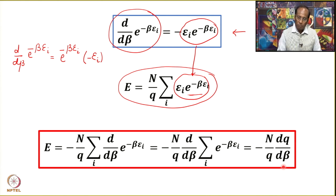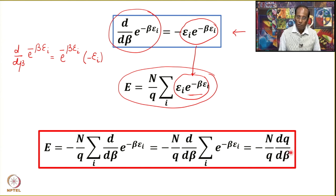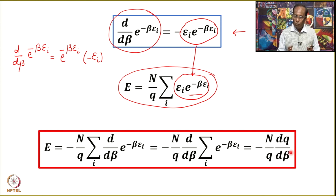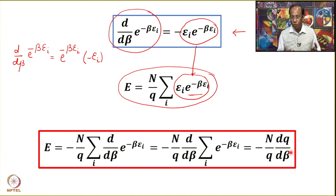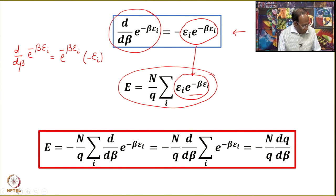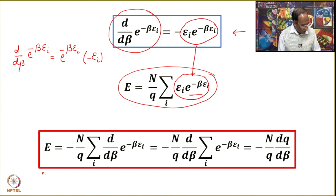Please note that β = 1/kT. Therefore, different books may express this in terms of temperature as well. Do not get confused when you see this written as dq/dT — basically β is also related to temperature, but with the Boltzmann constant involved. So we now have an expression for the total energy E = −(n/q)(dq/dβ).